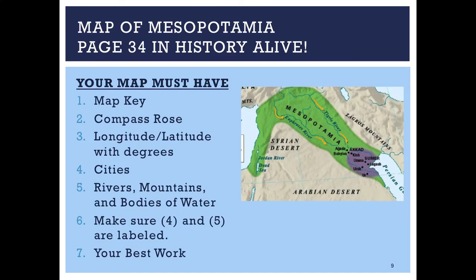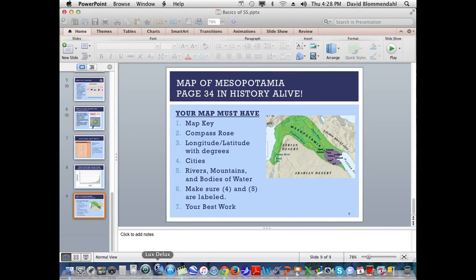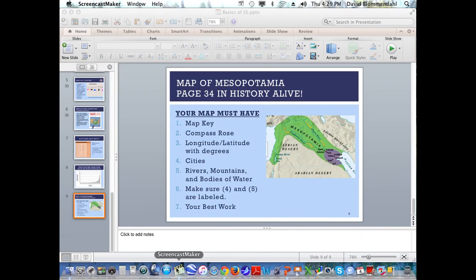It is time for you to write your summary at the bottom of your Cornell notes. You can write one summary at the end of all the notes or short summaries at the bottom of each page — whichever you choose, I will grade it when I look at your interactive notebook. I hope you have enjoyed today's lesson on the basics of social studies. Until next time, this is Mr. Blumendall signing off from the Waldo Social Studies YouTube channel.